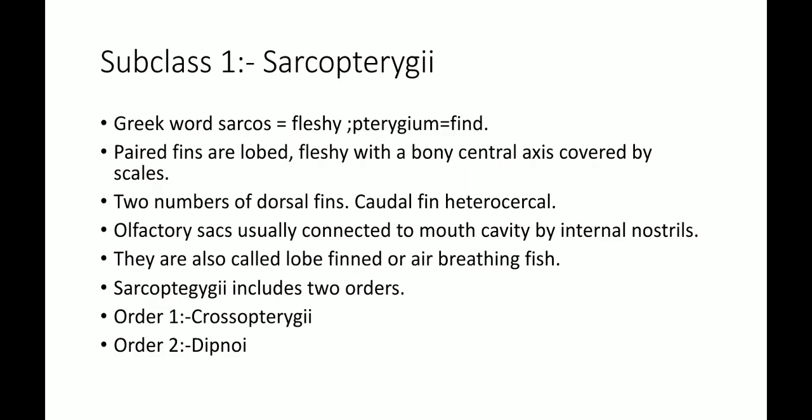Paired fins are lobed and fleshy, with a bony central axis covered by scales. There are two dorsal fins; the caudal fin is heterocercal. They are also called lobe-finned or air-breathing fish. Sarcopterygii includes two orders.